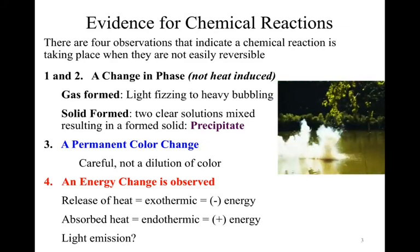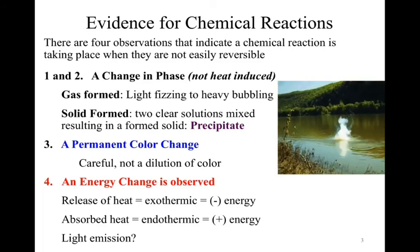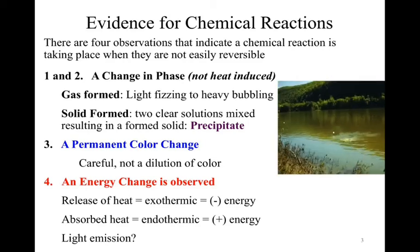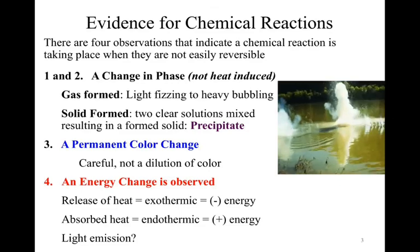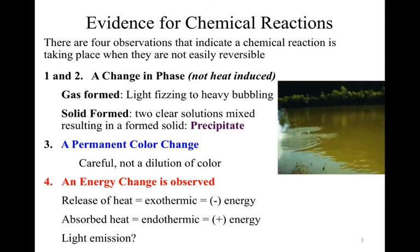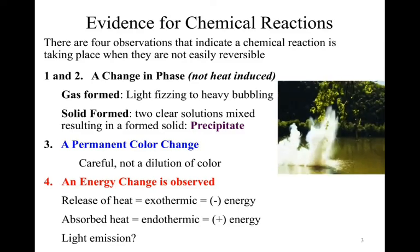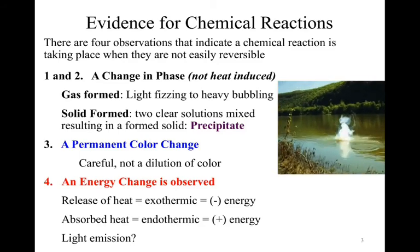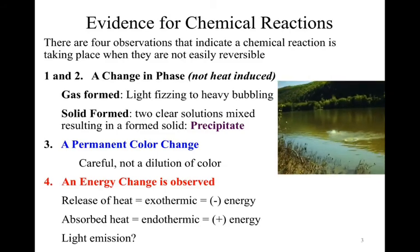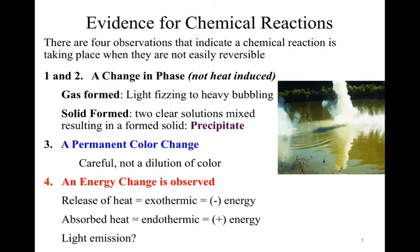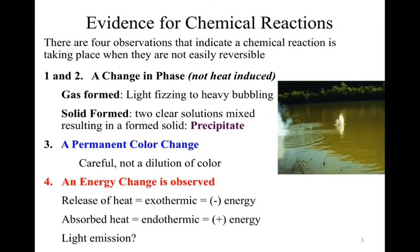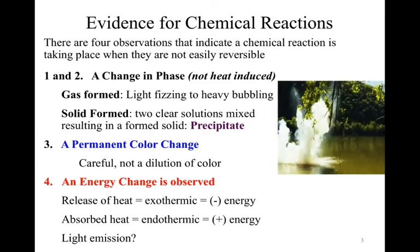So your textbook lists them out as four. I see them as really three. So one and two, I think, are the same thing. If we see a change in phase, and that change in phase must not be heat-induced. So when we transition from a solid to a liquid to a gas, we have to add energy. We take ice and melt it into water and then boil it into a gas. We're adding heat. We are supplying the energy necessary to cause the chemical to change its physical state. But what if we don't supply energy? Well, if we don't supply energy, that energy has to come from somewhere. Well, that somewhere is the chemical. So we're having a chemical change.